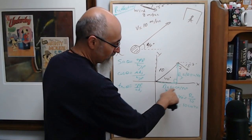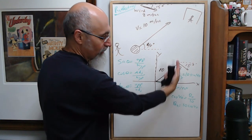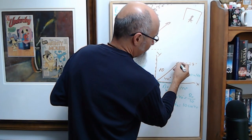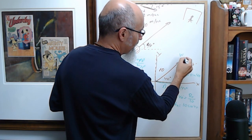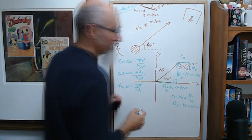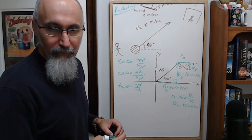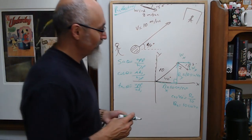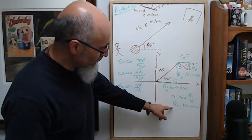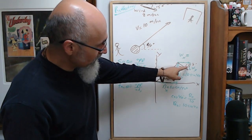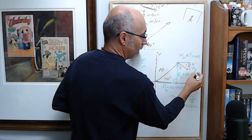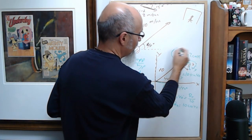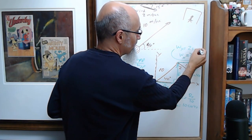Now we do the same thing for the wind vector. The wind in the x direction is 2 cos 15°, and the wind in the y direction is 2 sine 15°.